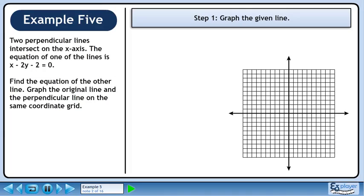In step 1, we'll graph the given line. Rewrite x - 2y - 2 = 0. Bring x and minus 2 over to the right side and change the signs. Divide both sides by minus 2 to isolate y. This gives us y = 1/2x - 1.